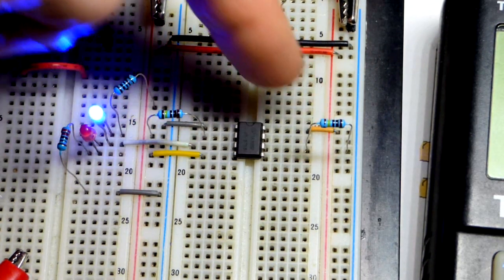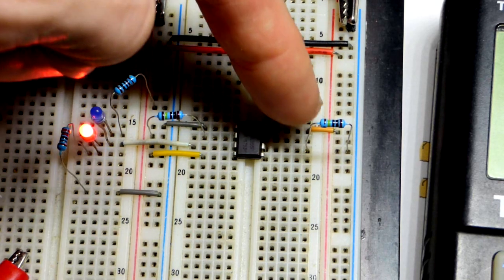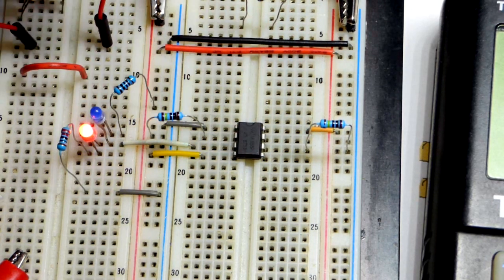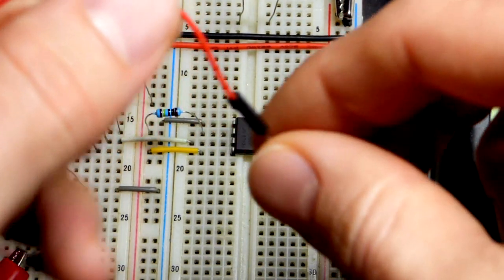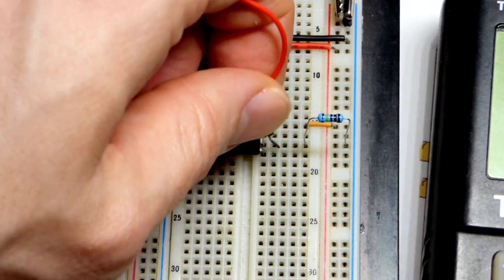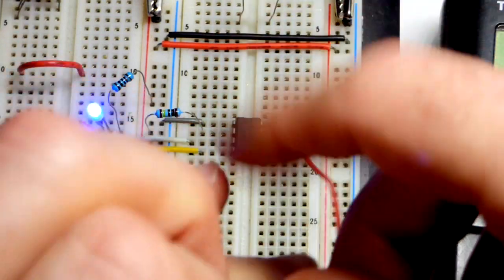And there you can see that when I touch them, then it will switch. Again, we don't have to touch the resistors directly in this case. I can have metal going anywhere. So now, actually, I'm in the wrong one.